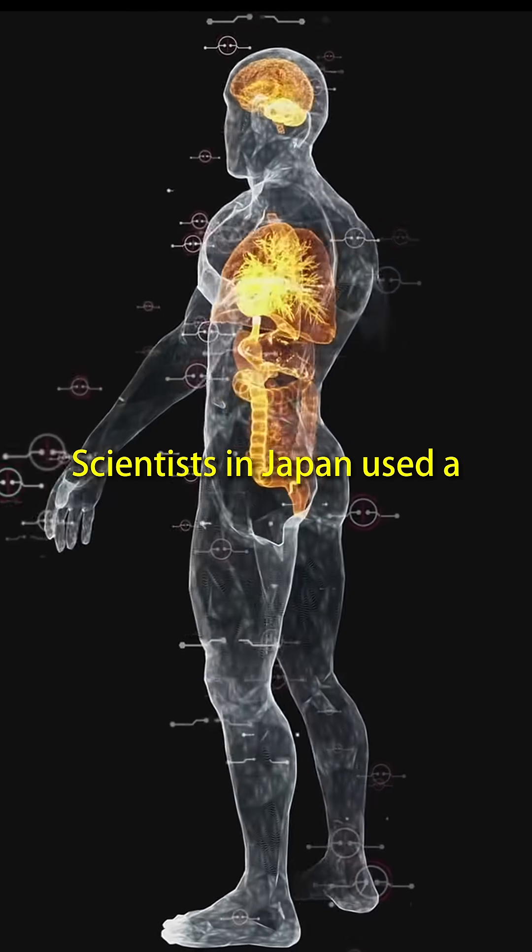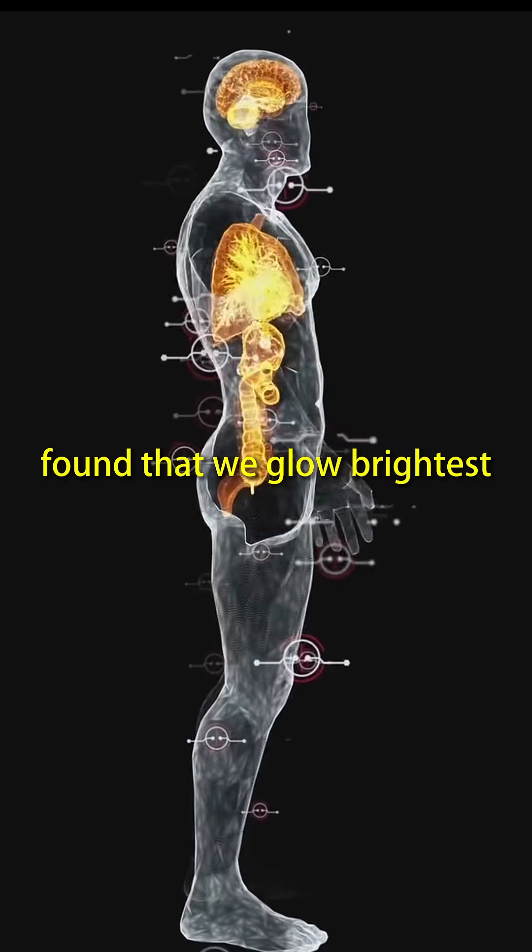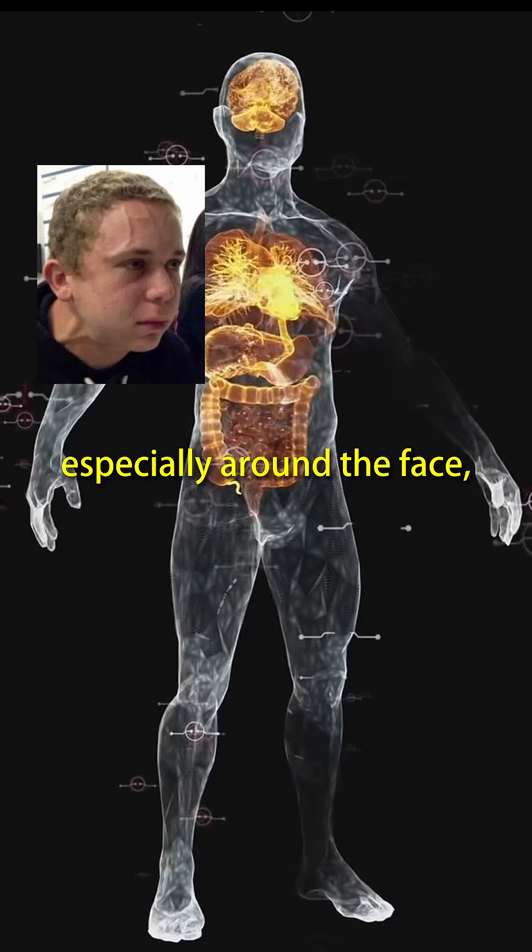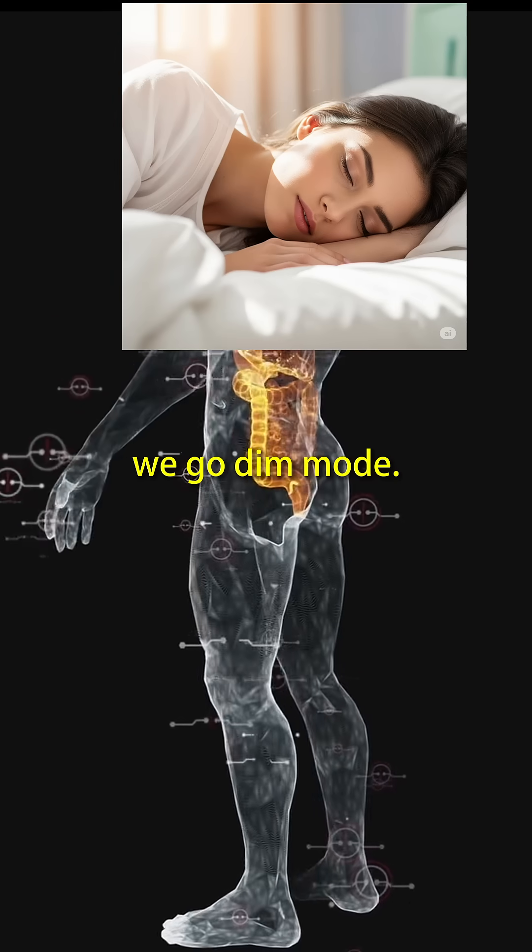Scientists in Japan used a super-sensitive camera and found that we glow brightest in the late afternoon, especially around the face, neck, and chest. And at night, yeah, we go dim mode.